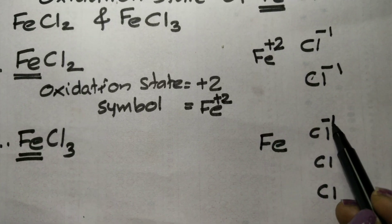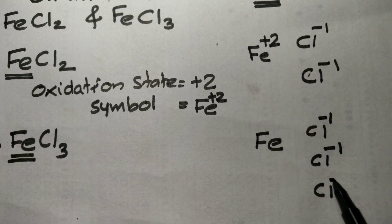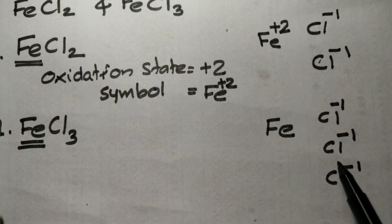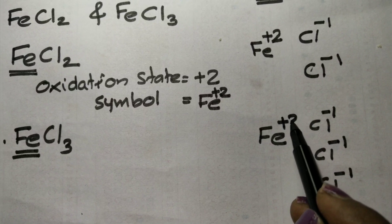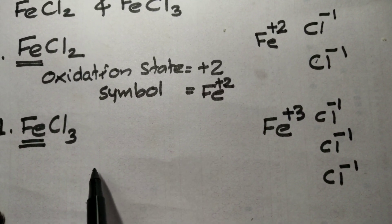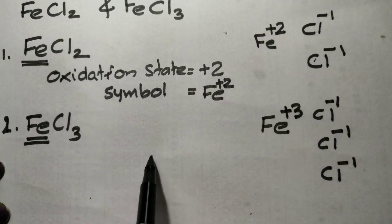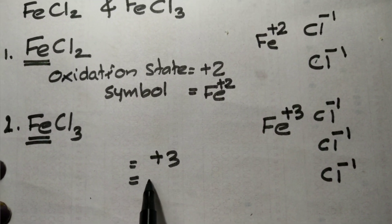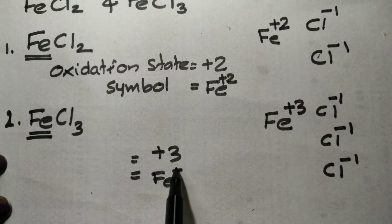Here, one electron is donated per chlorine. The oxidation state equals 3 electrons donated. So the oxidation number and oxidation state is plus 3, and the symbol is Fe³⁺.